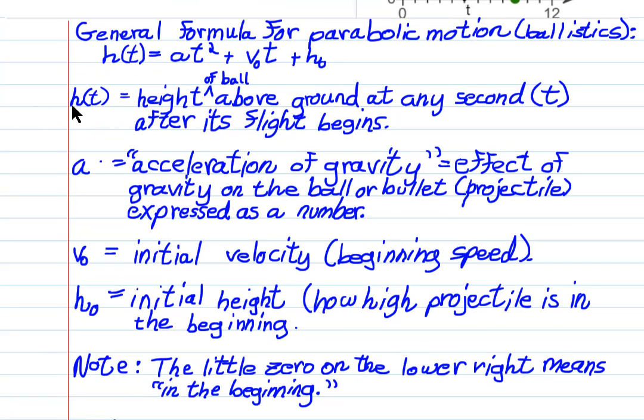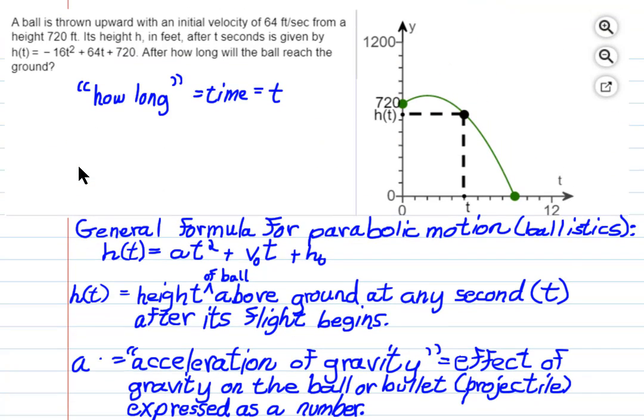h(t) is the height above the ground at any time t, after the ball is released. a is the acceleration of gravity. It's a negative number that indicates the effect of gravity on the ball, which is always down, down, down.